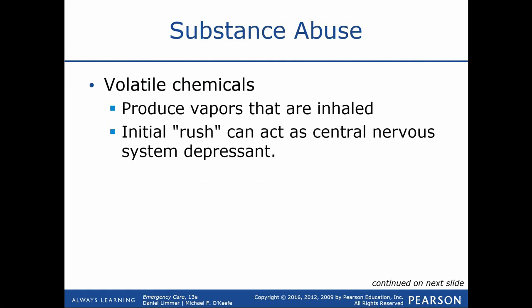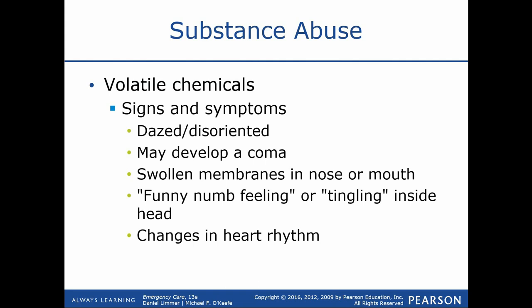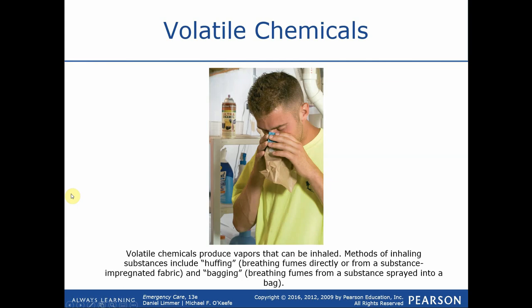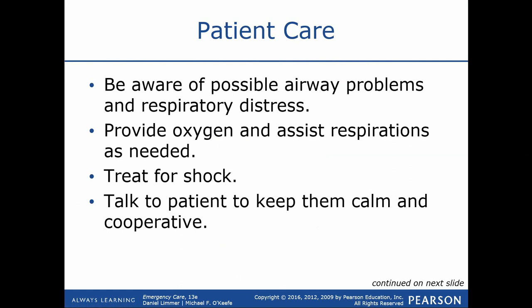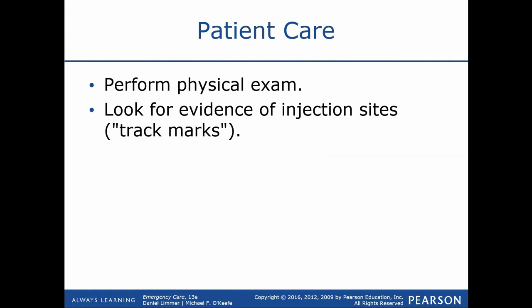Volatile chemicals — things like huffing paint cans — kill brain cells and provide only a short temporary high. These patients typically present dazed and disoriented. You might see swelling around the tissues of the airway or nose, signifying chemical damage. These patients are often in denial — especially because many are kids who don't want parents to find out. We treat the appropriate signs and symptoms and prepare them for transport.